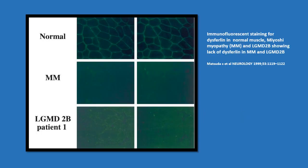This figure shows immunofluorescent staining for dysferlin in normal muscle, Miyoshi myopathy, and LGMD2B, and shows lack of dysferlin in Miyoshi myopathy and LGMD2B.